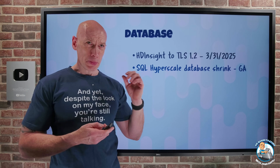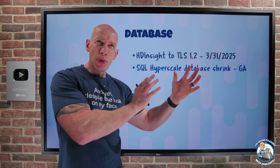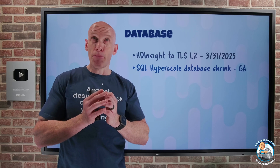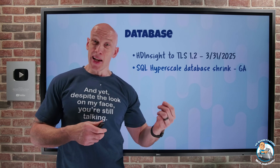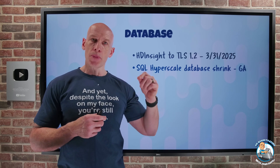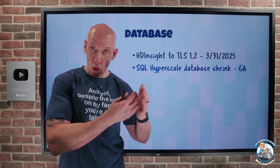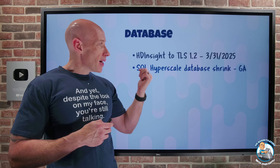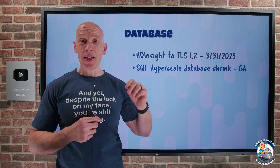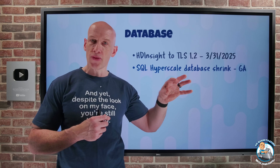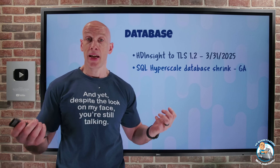SQL Hyperscale now has database shrink capability. SQL Hyperscale separates compute from the page server, giving you massive performance and capacity. Shrink lets you reclaim unused space within the database, optimizing space use and reducing storage costs. This capability is now part of the Hyperscale tier and uses the regular DBCC SHRINKDATABASE and DBCC SHRINKFILE T-SQL commands, so no special knowledge is needed.